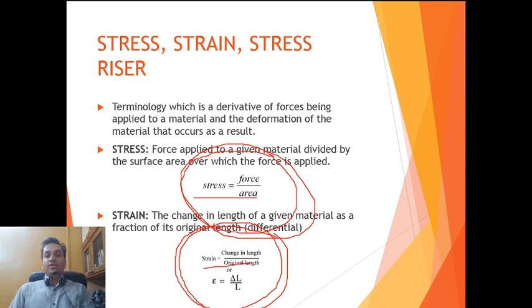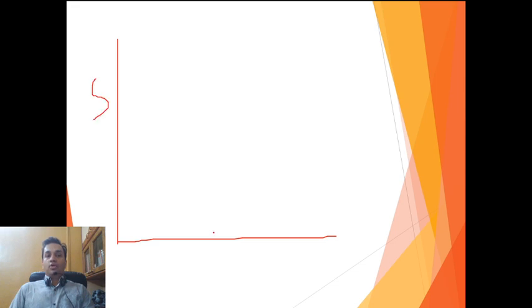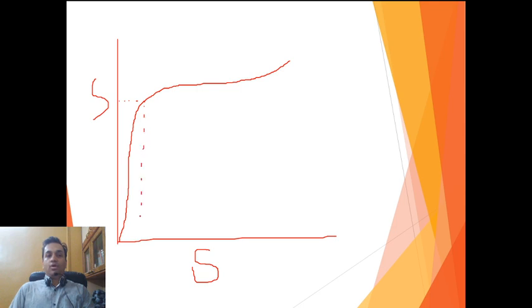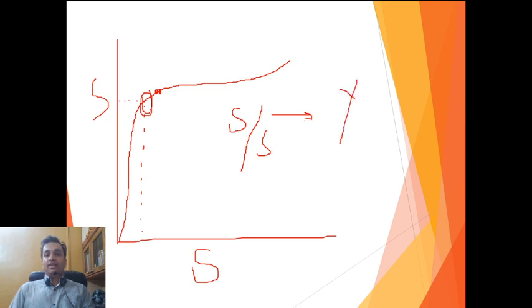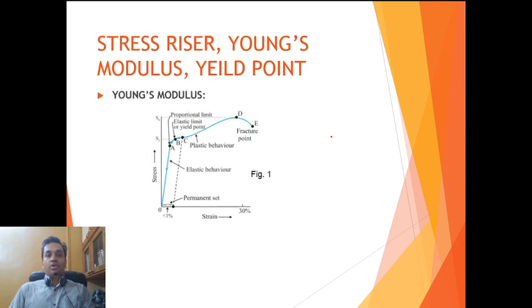Now, let us plot stress versus strain on a graph, with stress on the y-axis and strain on the x-axis. To a certain extent, stress and strain are proportional to each other, and beyond a certain point the graph becomes a plateau. The point where the graph stops being linear and becomes a plateau is called the proportional limit. Within the proportional limit there is also a point called the yield point. The slope of this stress-strain curve — stress divided by strain — is called Young's modulus.